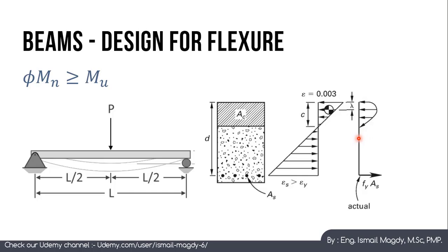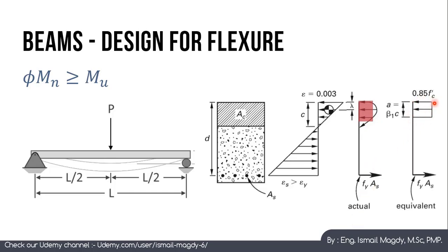The parabolic compression shape is difficult to use in design because it is not a regular shape. We convert it into a rectangular shape, which is much easier to work with. The depth of this rectangle is less than c, and the stress value is less than the maximum f'c. This gives us the Whitney stress block with 0.85f'c instead of f'c, and depth a instead of c.